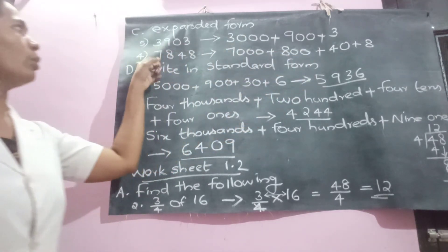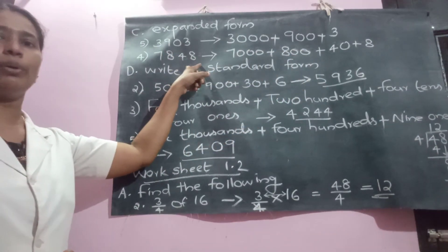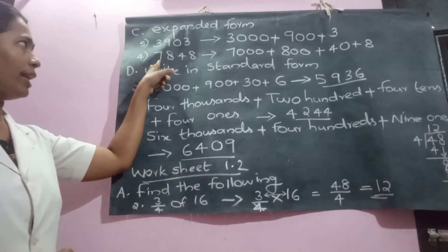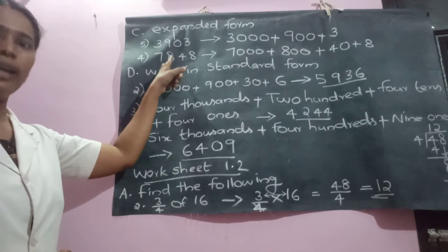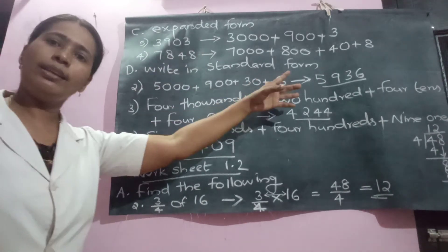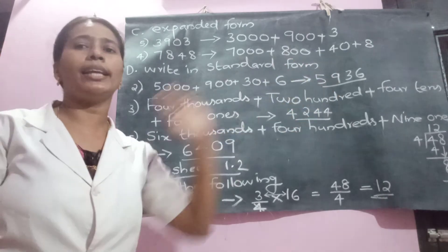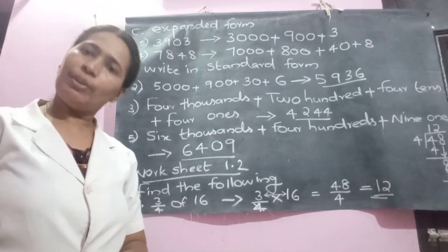Next number is 7, 8, 4, 8. Write the expanded form as 7,000 + 800 + 40 + 8, connecting each place value with a plus sign.